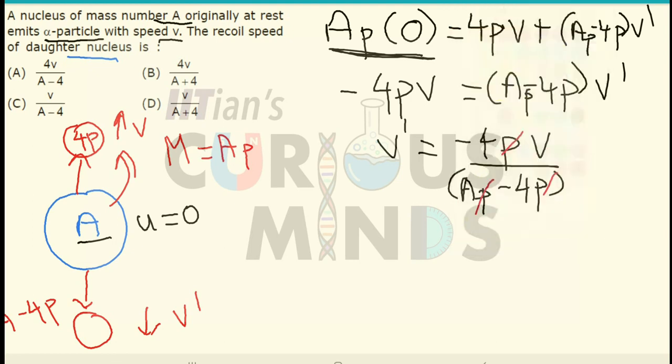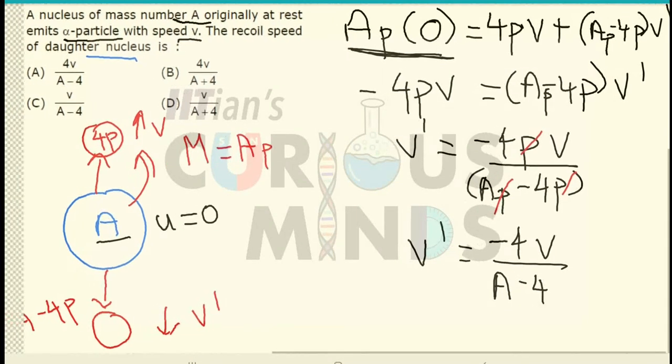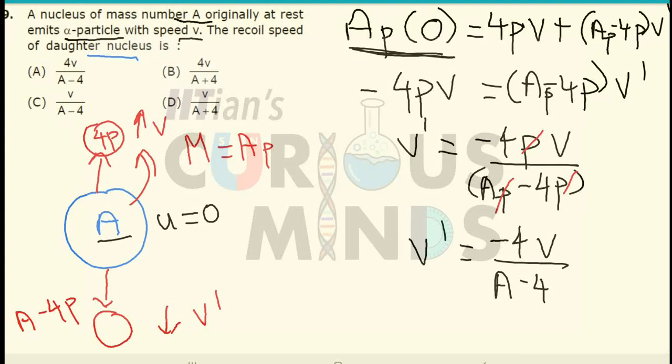So the remaining part over here, V dash will be equal to minus 4V divided by A minus 4. This will be the final answer. If I remove the negative sign, which will be option number A.